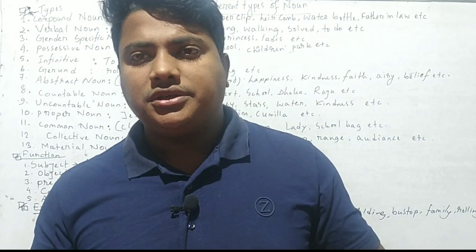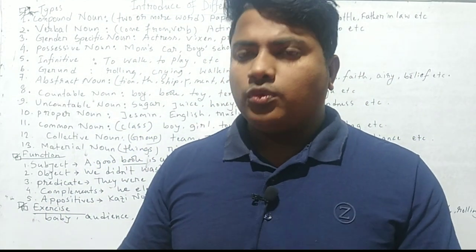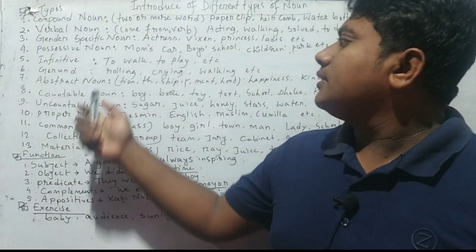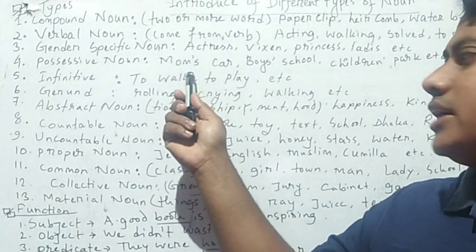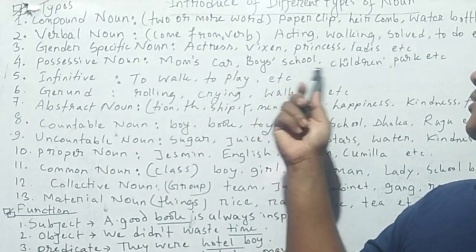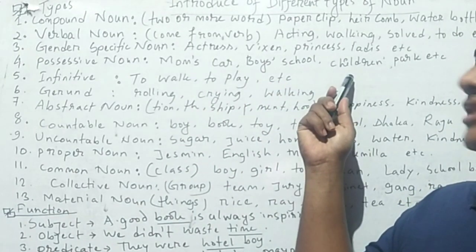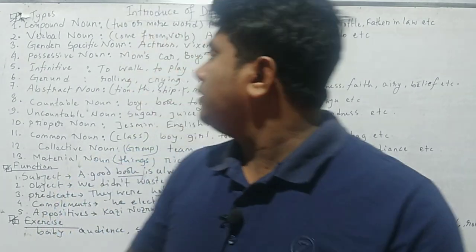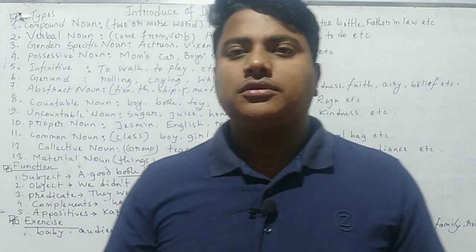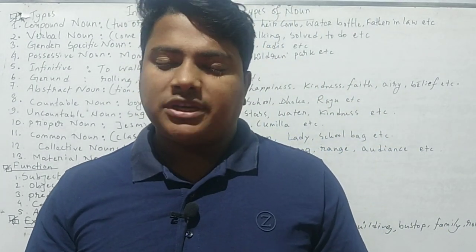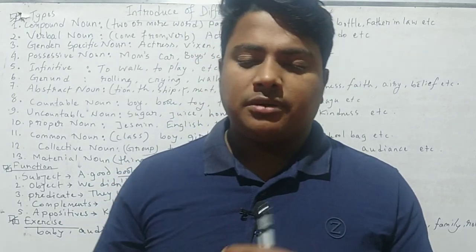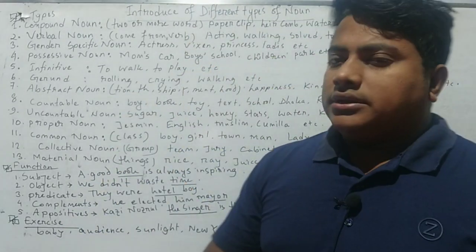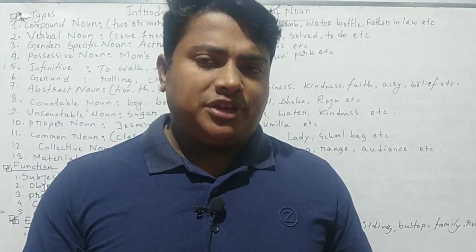Another noun type available in English grammar is the possessive noun. Some nouns are used with the symbol of an apostrophe, such as mom's car, boy's school, children's park, etc. These are possessive nouns. Sometimes a possessive noun is also used by the help of a pronoun.